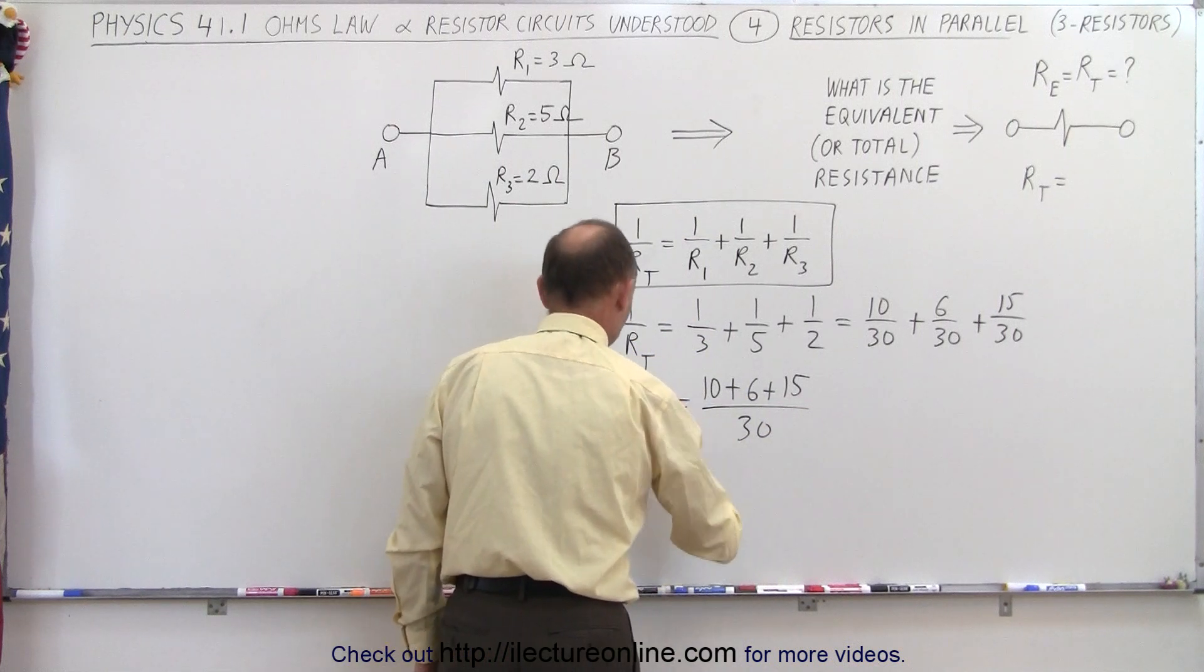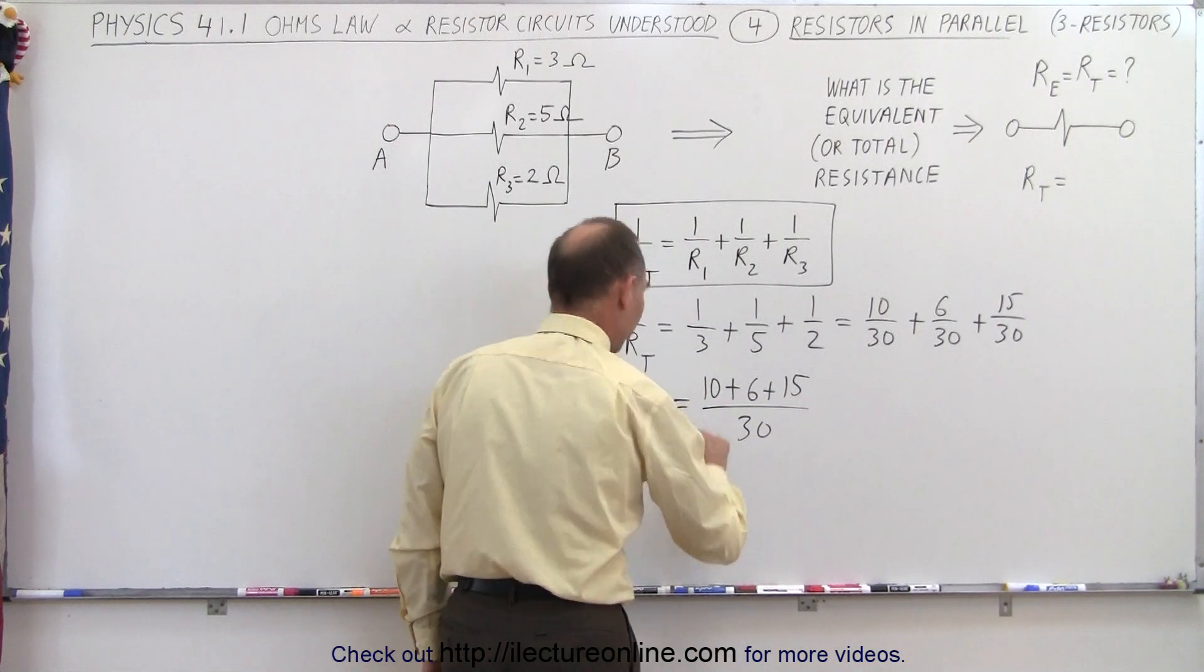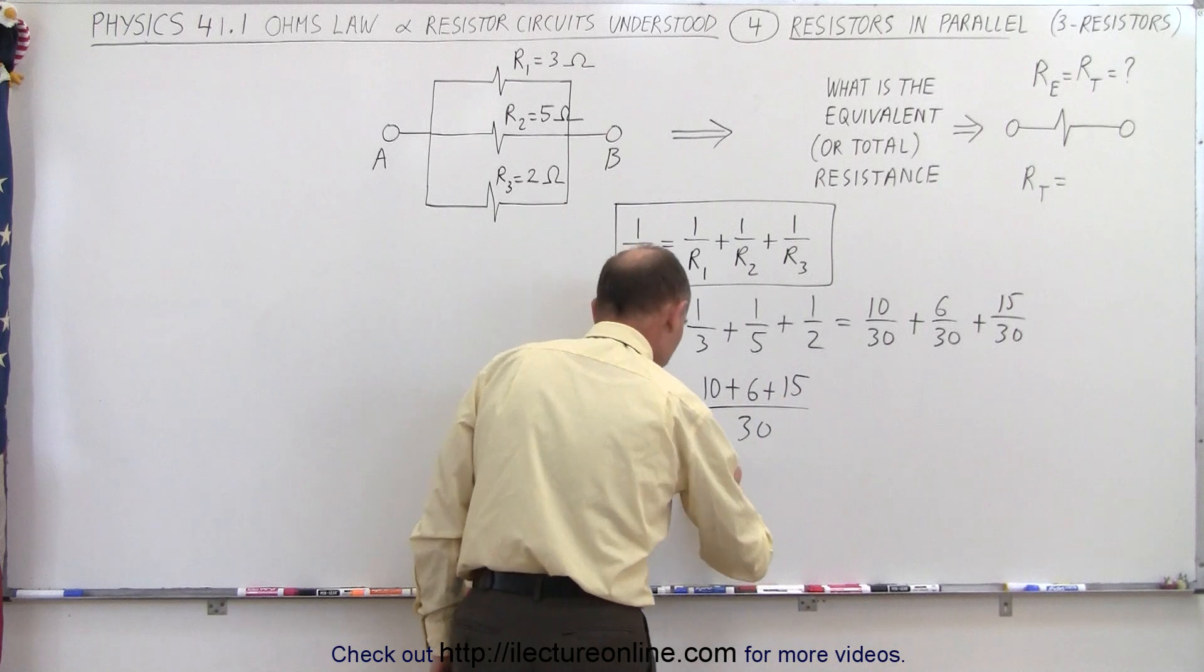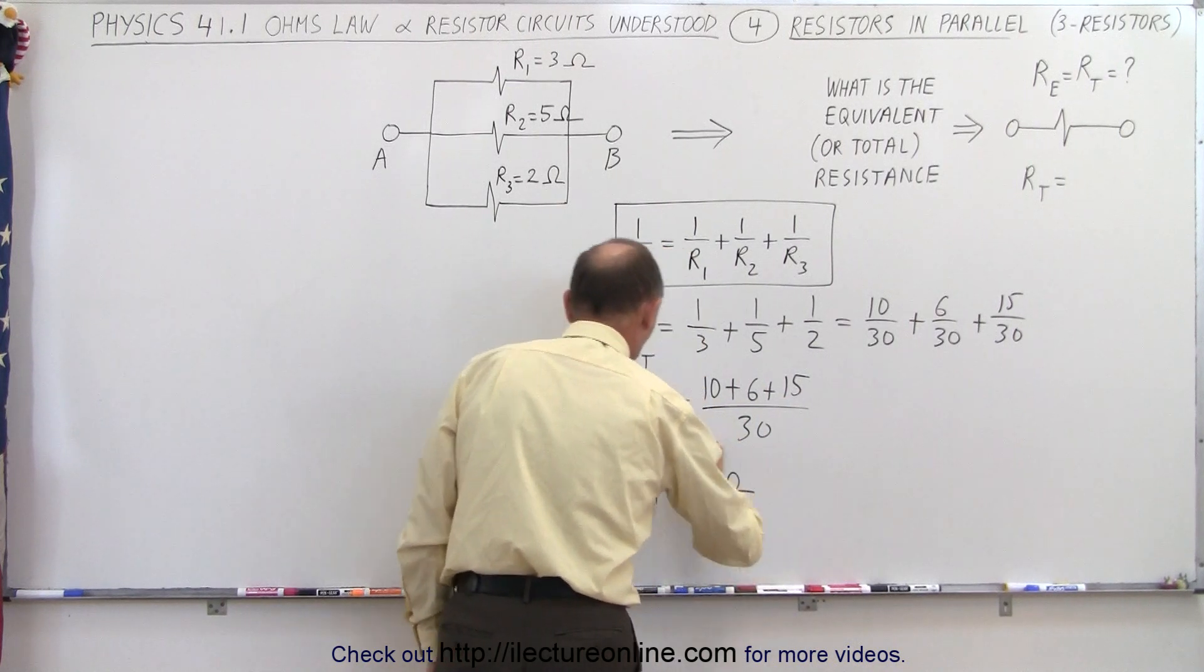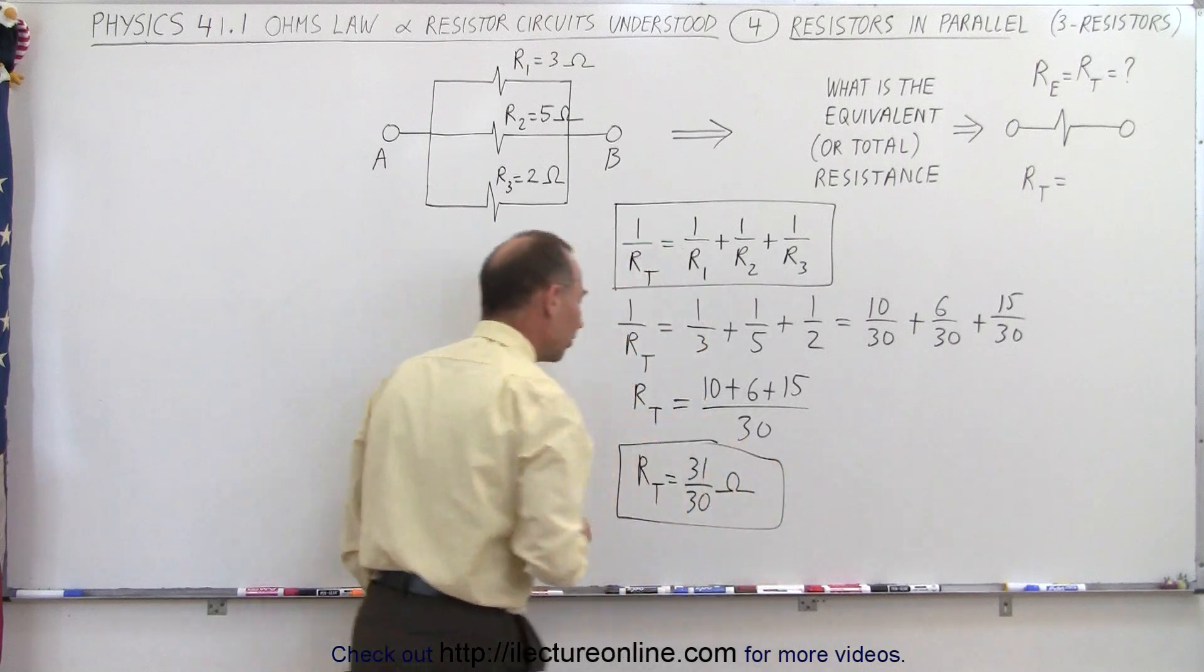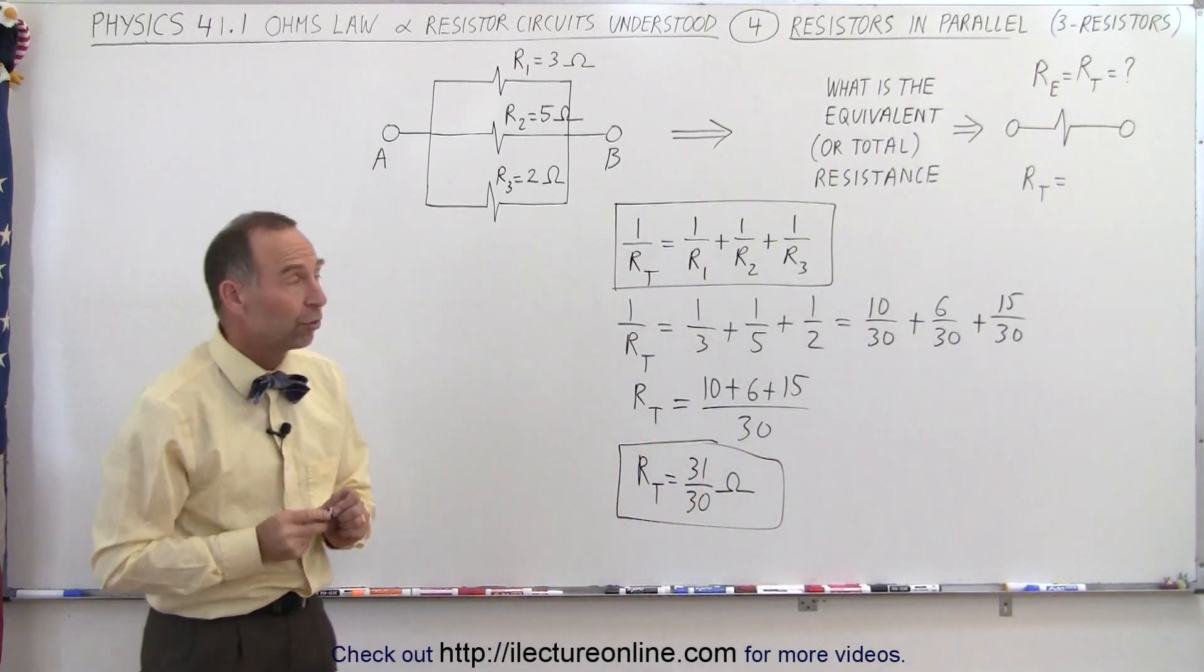In other words, the total resistance then can be written as 10 plus 6 is 16, plus 15 is 31 over 30 ohms, just slightly more than one ohm resistance for the three connected in parallel.